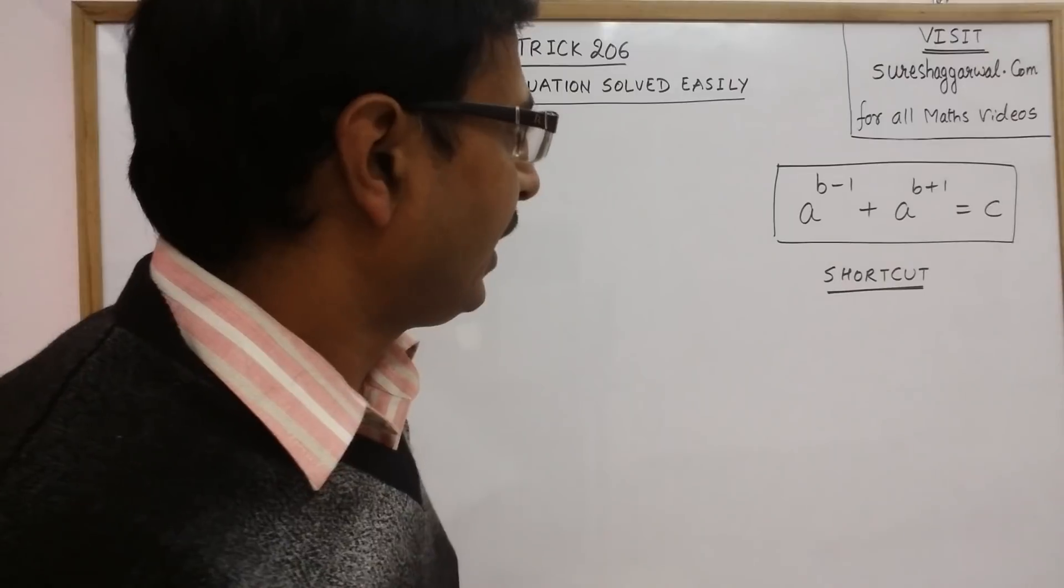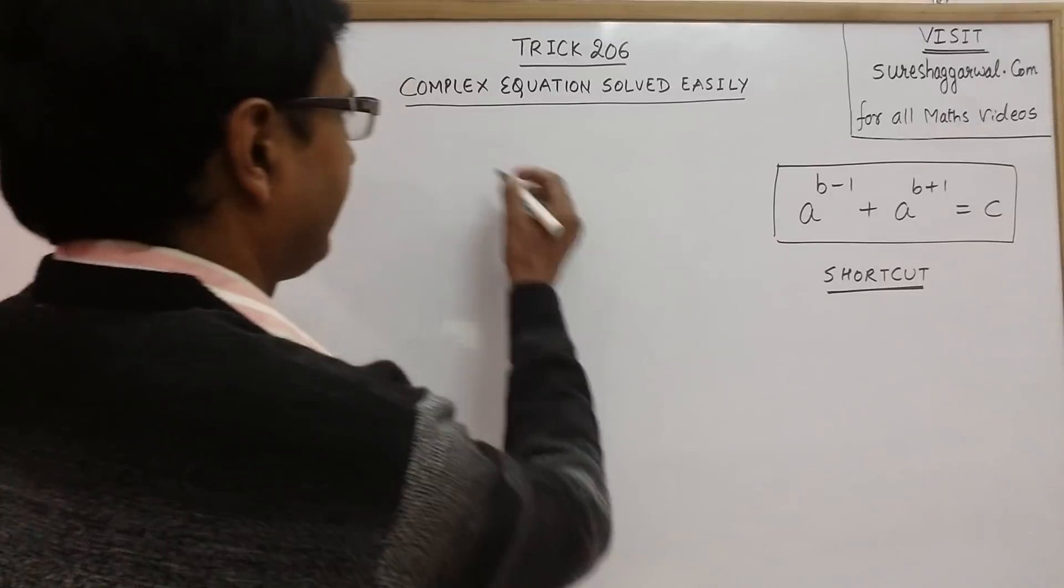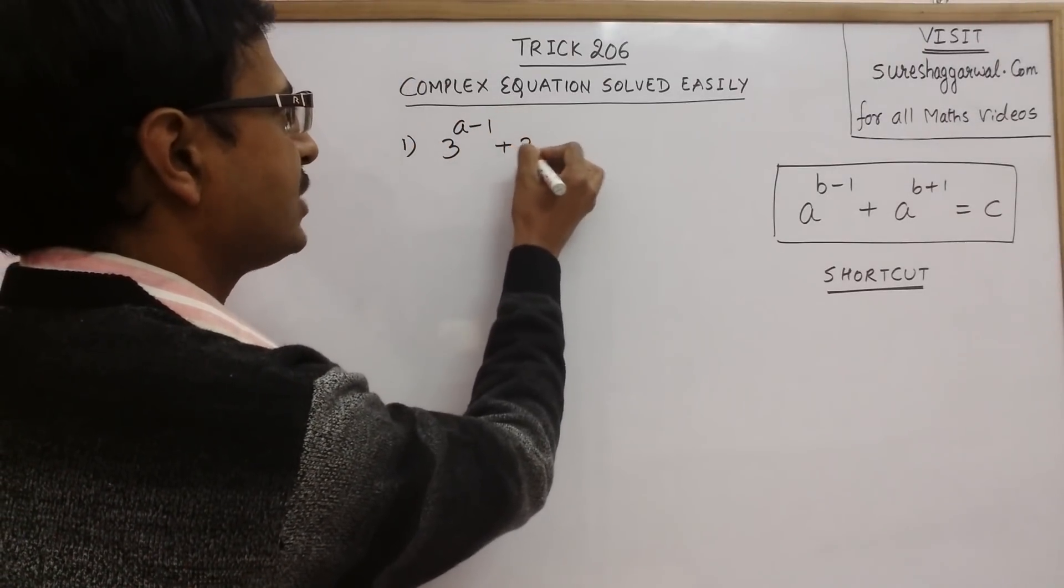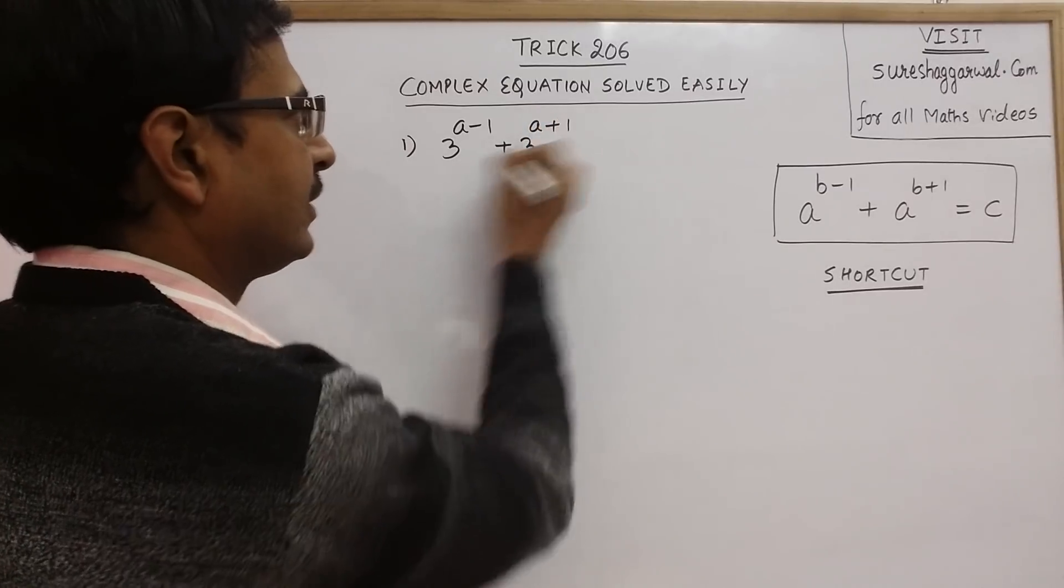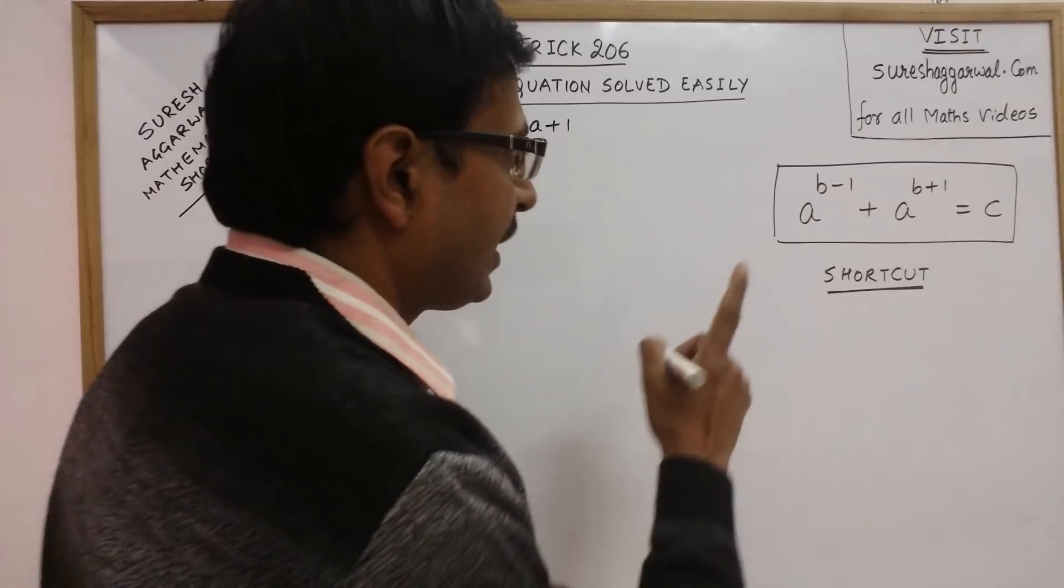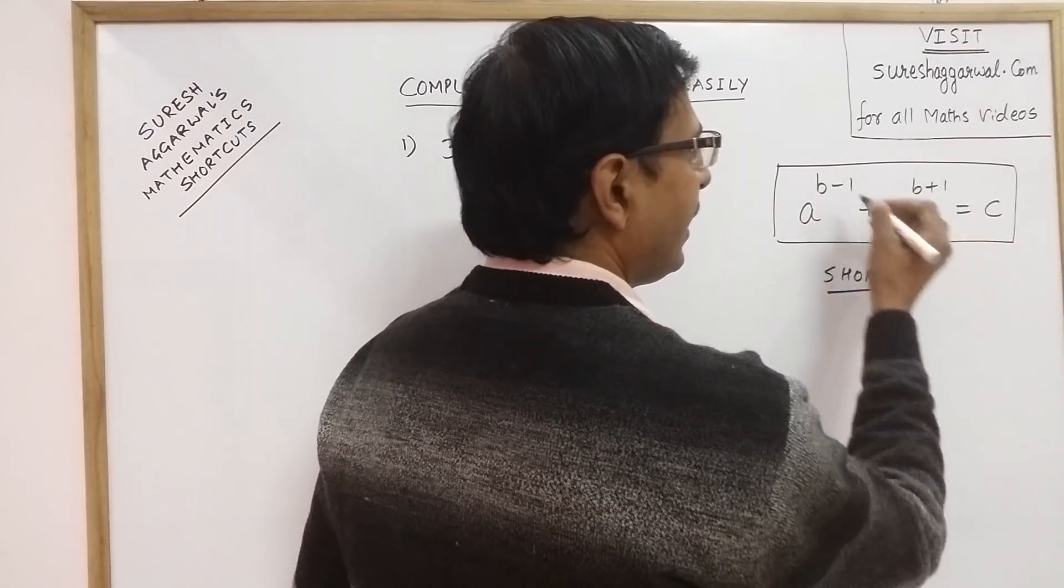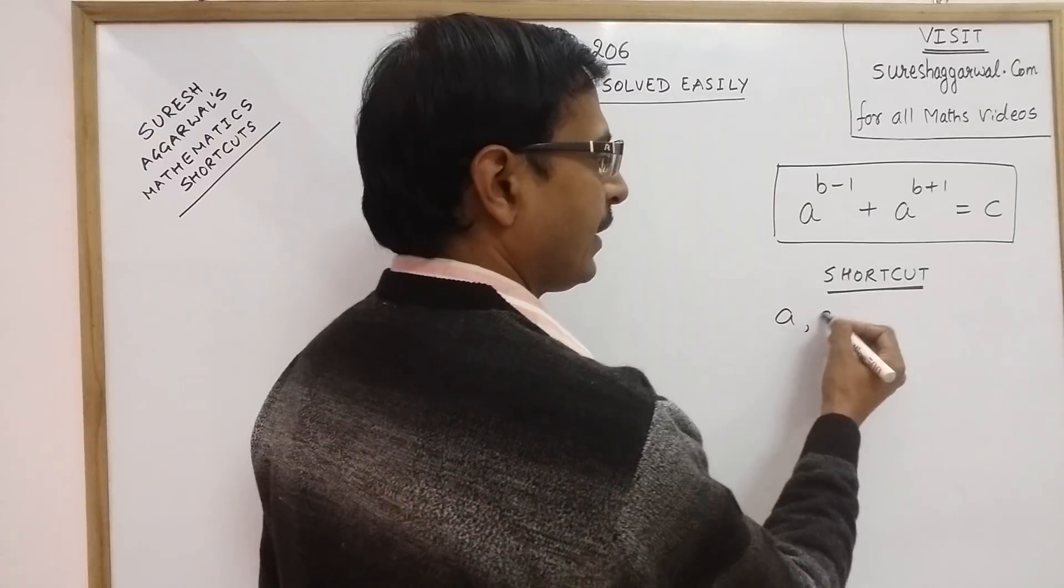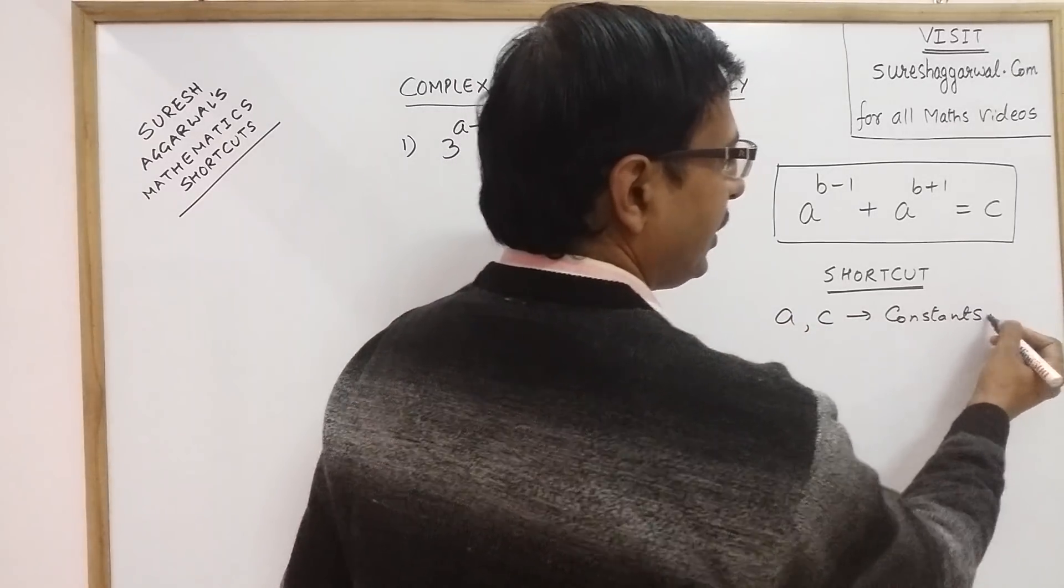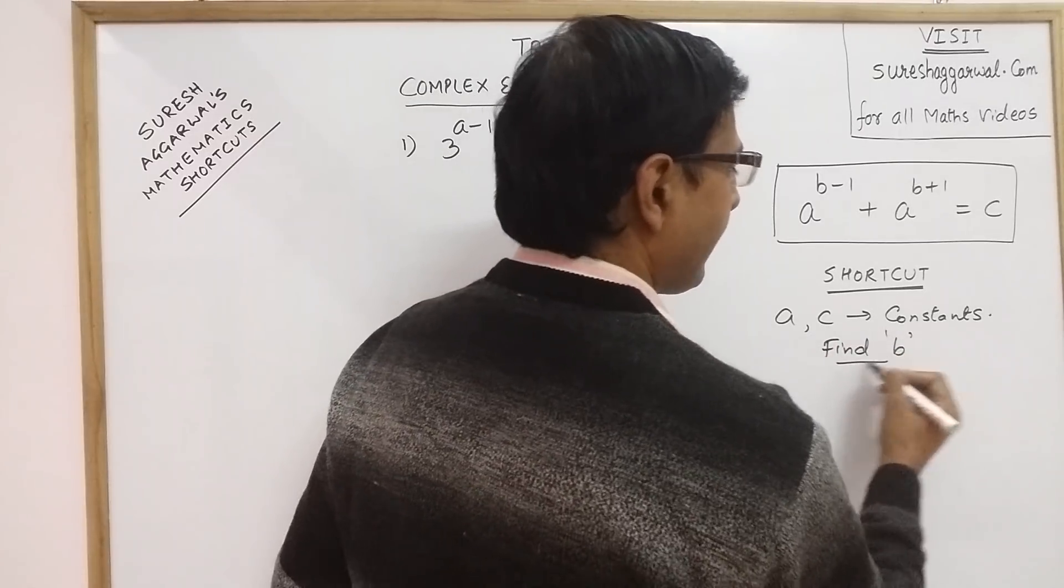I will take an example and illustrate this. Say we have 3 raise to power a minus 1 and 3 raise to power a plus 1. Now here, in this question, this a and c, they are constants and we need to find the value of b.